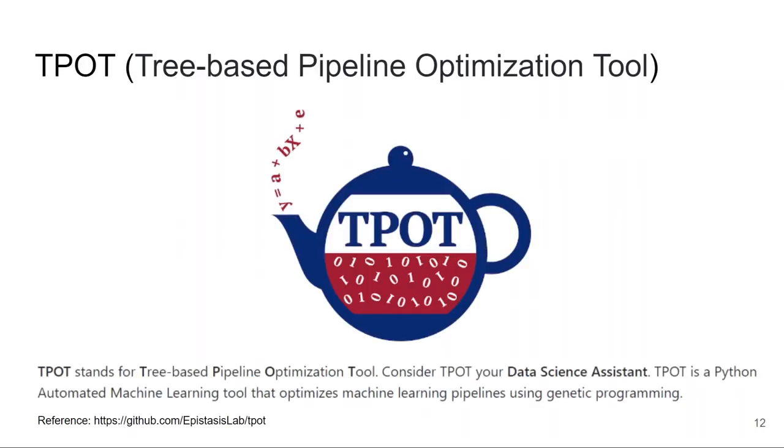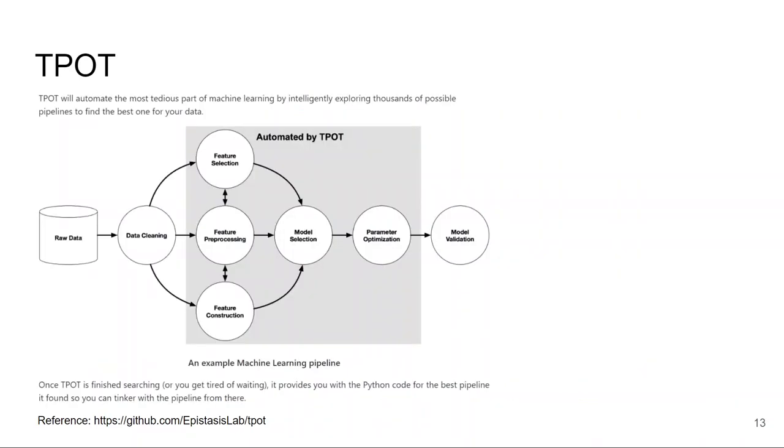Let's discuss another AutoML library, TPOT. The full form of TPOT is Tree-based Pipeline Optimization Tool. TPOT is a Python automated machine learning tool that optimizes machine learning pipelines using genetic programming. So TPOT uses genetic programming to optimize the best machine learning pipeline.